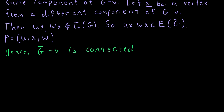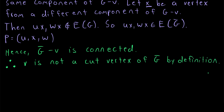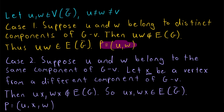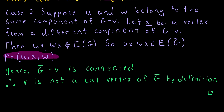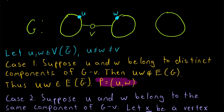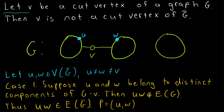Hence we have shown that G complement minus V is connected — interestingly, even without knowing whether the original graph G was connected. Since every pair of vertices in G complement is connected by a path not containing V, deleting V leaves all vertices still connected. Therefore, V is not a cut vertex of G complement by definition. That completes the proof.